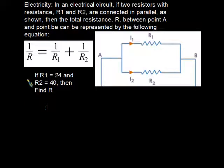This problem is a good example of how to solve a rational equation. The problem involves electricity. In an electrical circuit, if two resistors with resistance R1 and R2 are connected in parallel as shown, then the total resistance R between point A and point B can be represented by the following equation.